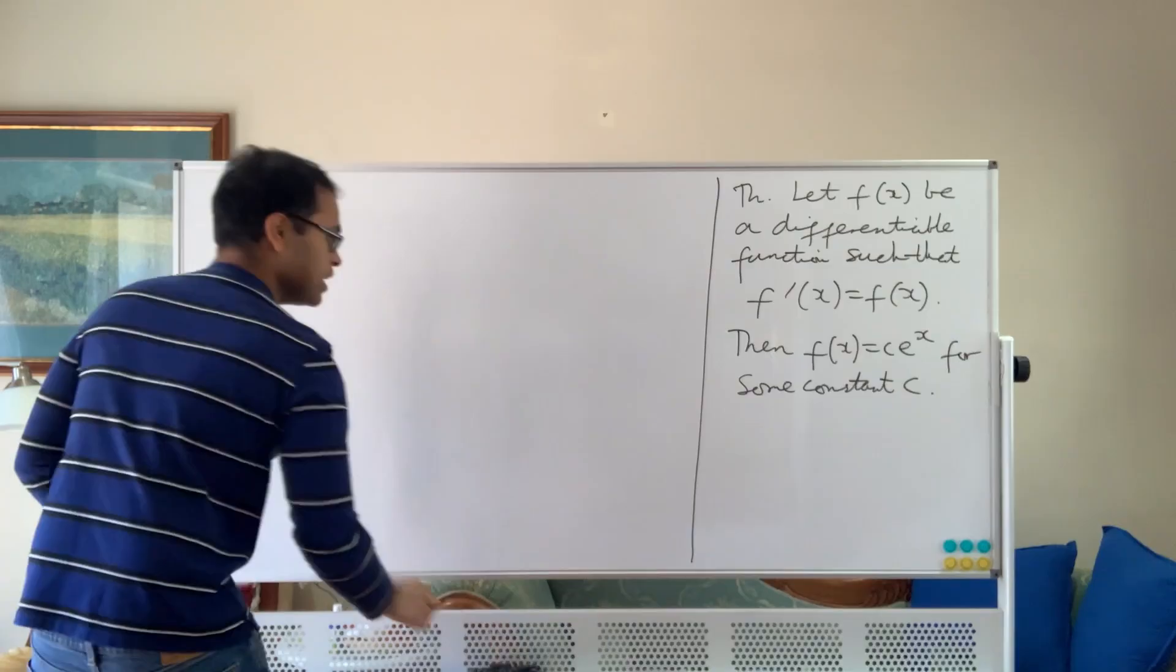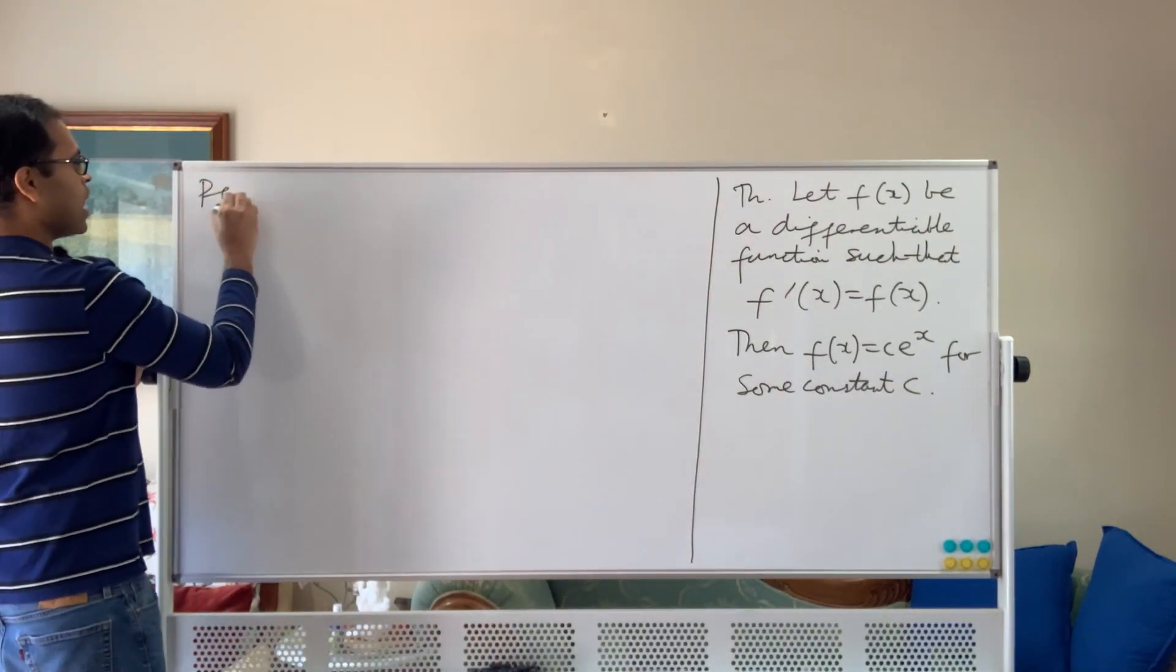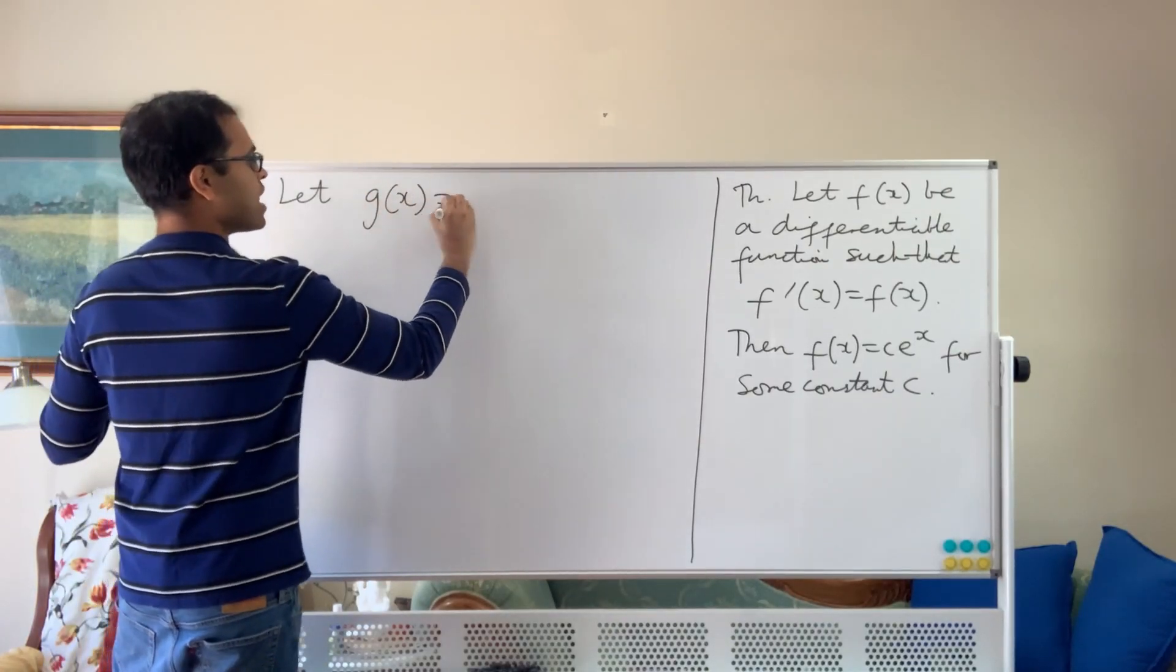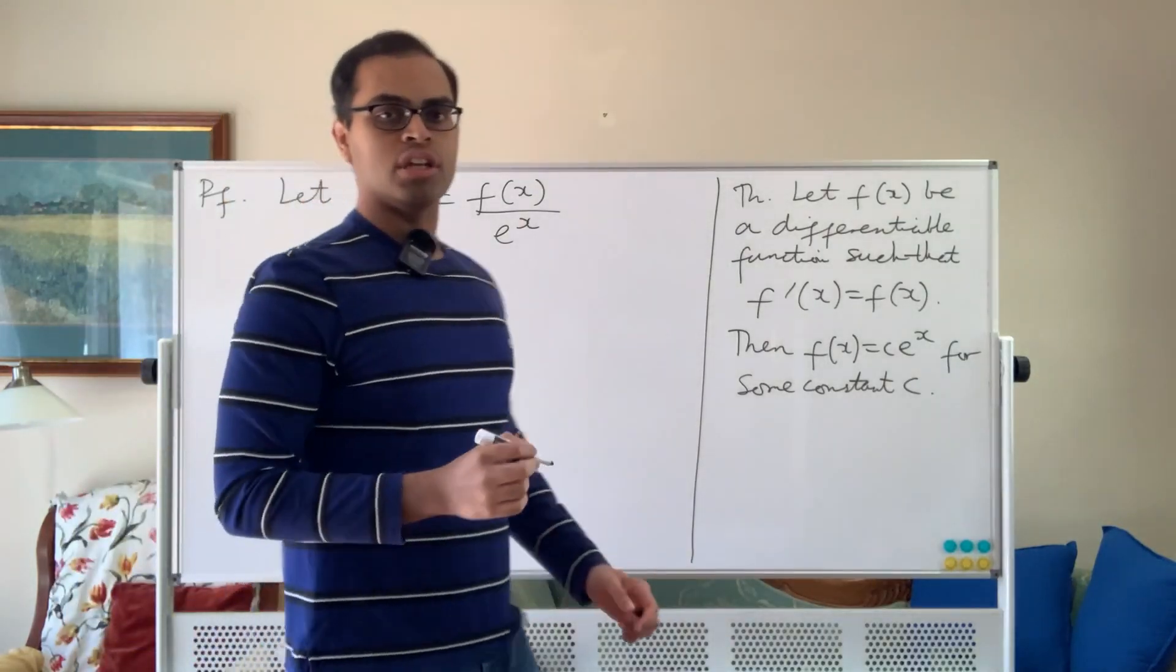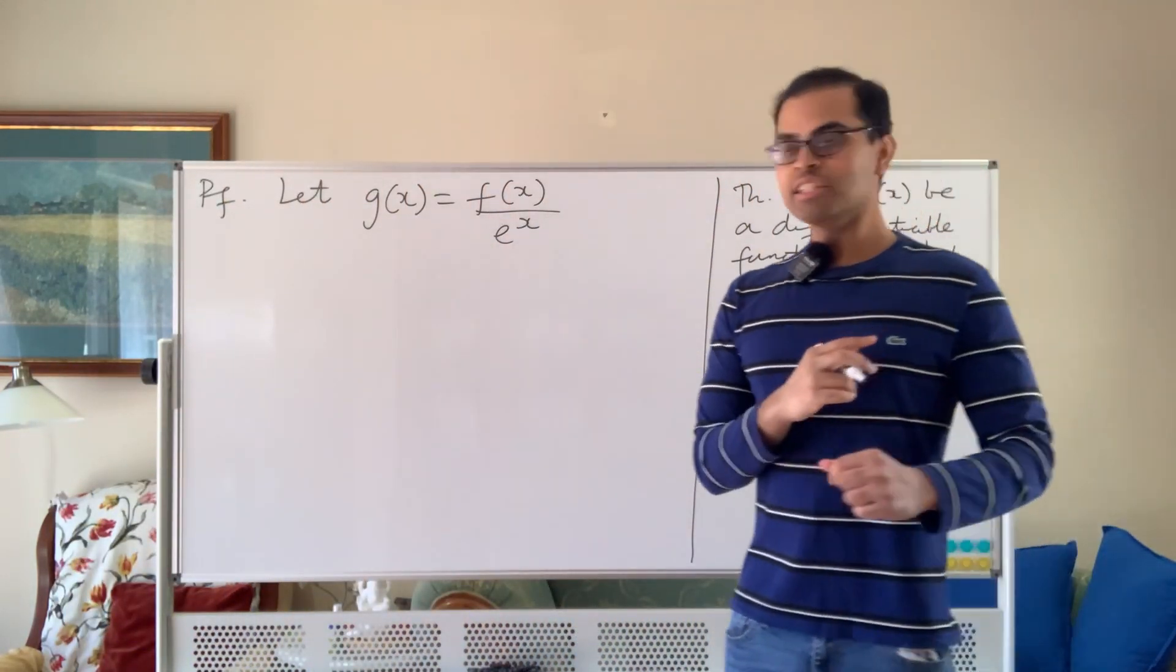So what we're going to do, and here's our proof, it's going to be on this side of the board. Our proof is going to be, let us define g of x. We define a new function, g of x equals to f of x divided by e to the x. Okay, simple enough function. We want to understand g of x, so we're going to differentiate g of x, so let's do that.